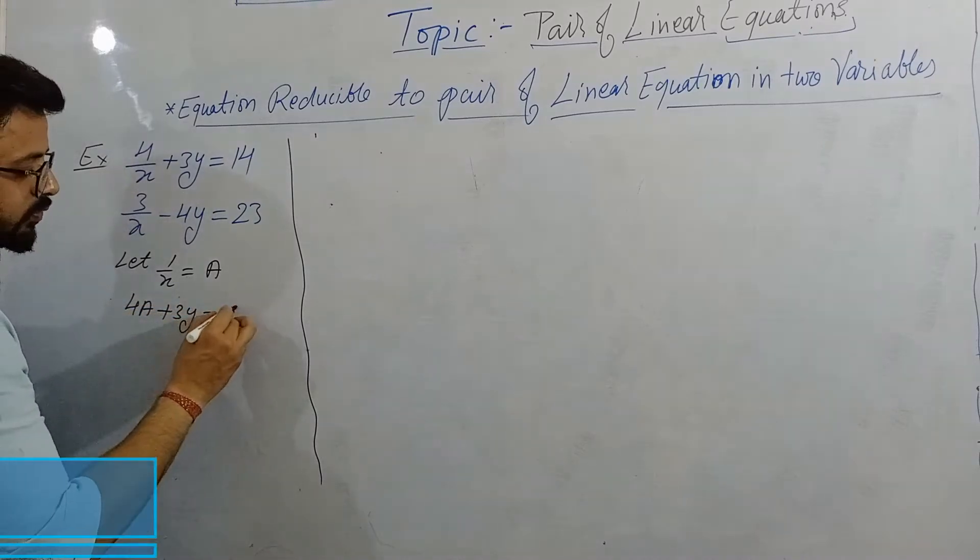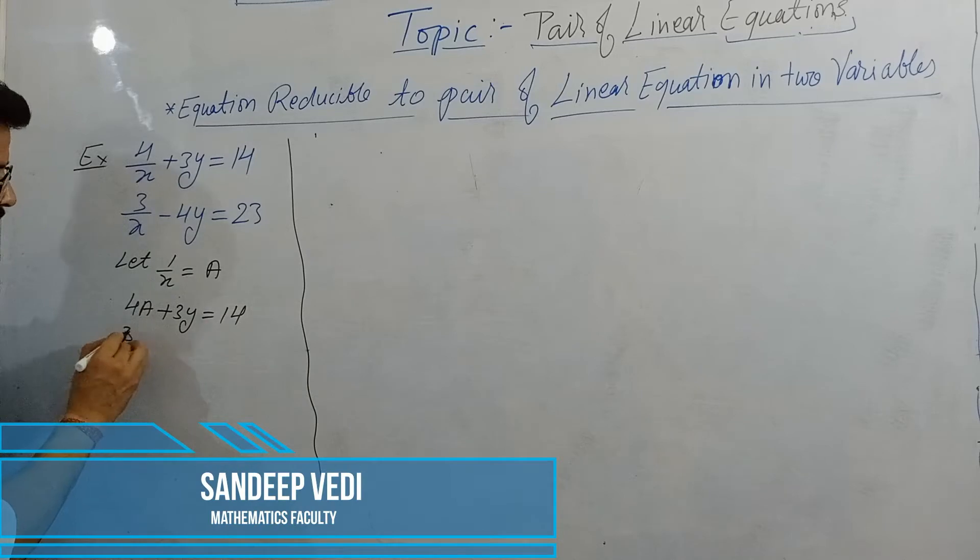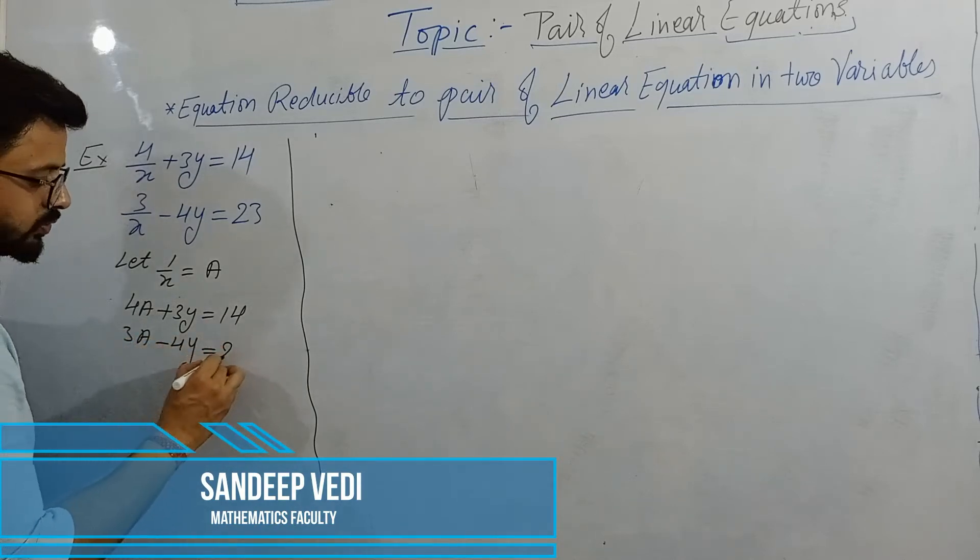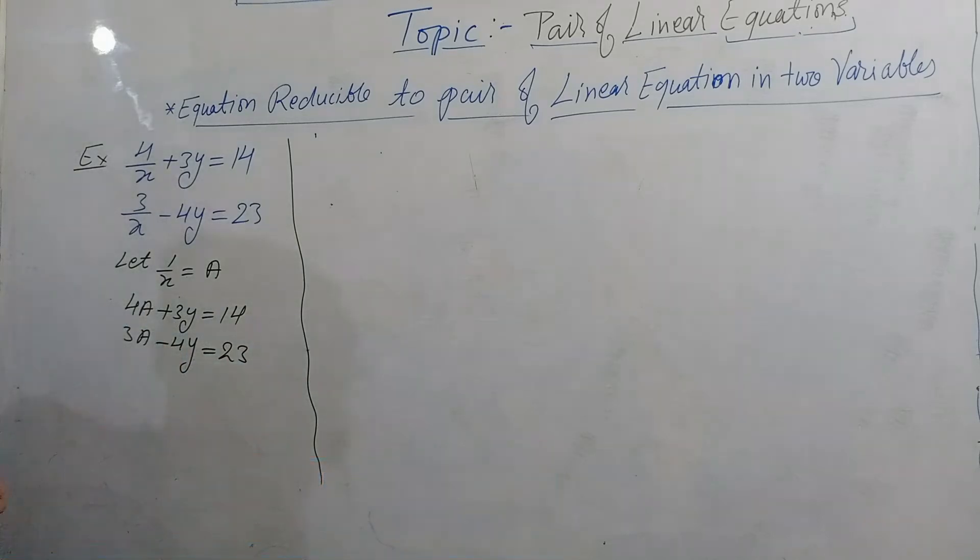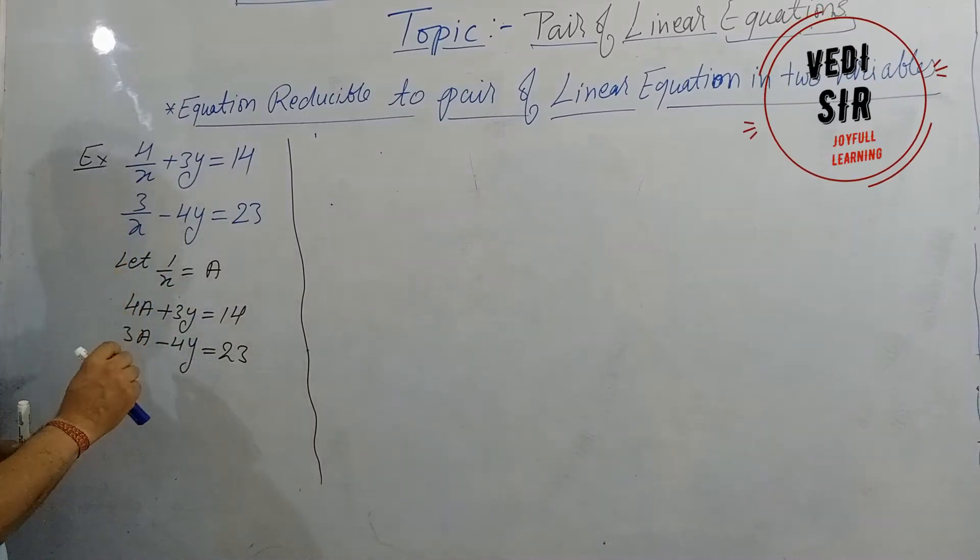So 4A plus 3Y is equal to 14 and 3A minus 4Y is equal to 23. Now the form is reduced. Now we will solve. How to solve this? Three methods you know. So now you can multiply. So now here I will make the coefficient of A equal, so this equation I am multiplying complete by 3, this equation by 4, complete equation I multiply.